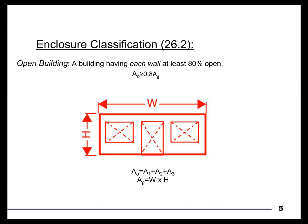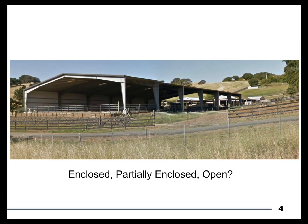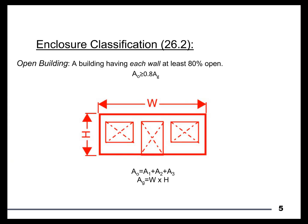In order to determine which of the three we have, it's important to understand the ASCE 7 definitions — not the English language definitions — and in this case they're quite different. While the building we looked at looks quite open, the definition of Open requires that all four walls need to be at least 80% open. Going back to our image, you can see that while the two side walls and the front face are very open, we have an entirely solid back wall. So in order to be an open building, each wall needs to be 80% open.